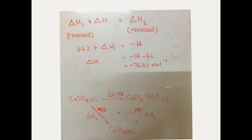we can reverse this value because we are going to go with the enthalpy change here in the reverse direction. So, reversing this negative 62, we put positive 62 plus the unknown delta H equals negative 14 because negative 14 would be the reverse of this positive 14 value with aqueous copper sulfate going to hydrated copper sulfate.